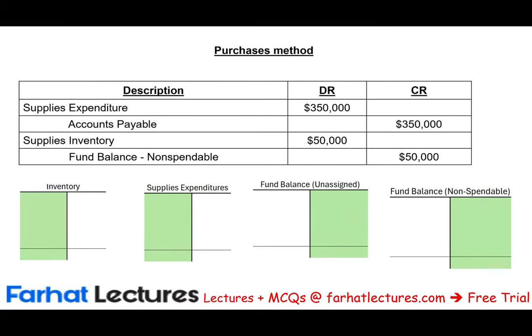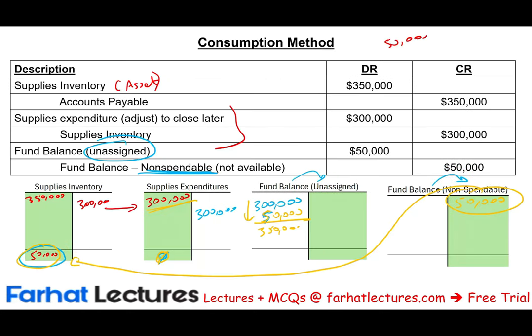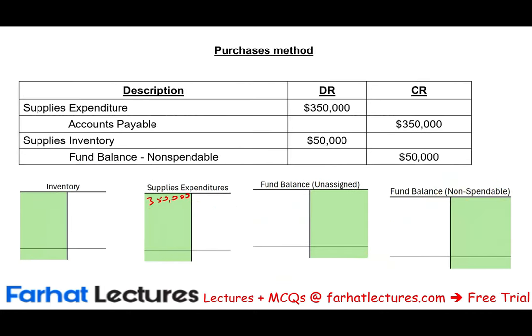Under the purchase method, as soon as I buy the asset, I debit expenditure and credit cash or accounts payable. The point is I expense the purchase immediately. I expensed $350,000 because once I purchased it, I'll be paying for it within 30 days — it's an expenditure. So on the statement of activities, I recorded expenditure of $350,000, compared to $300,000 under the consumption method. That's the first difference.